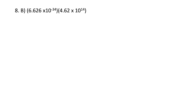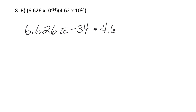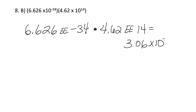This is exactly the way you want to put it in the calculator if you don't have the EE button. If you do have the EE button, you're going to do 6.626, hit that EE button, negative 34, hit the times button, 4.62, hit the EE button, 14. When you do that, you get 3.06 times 10 to the negative 19.